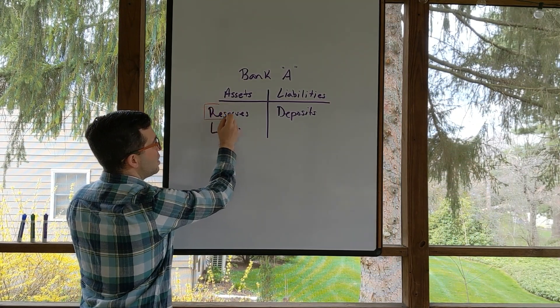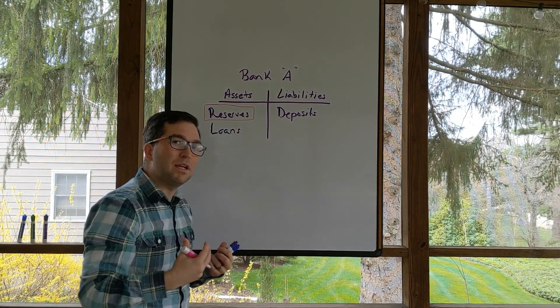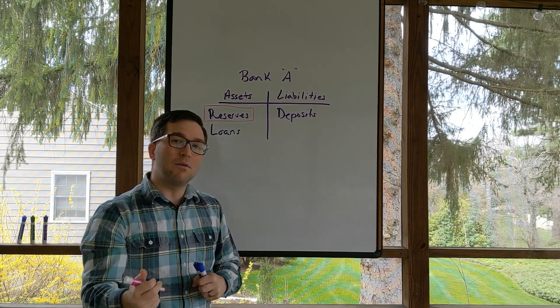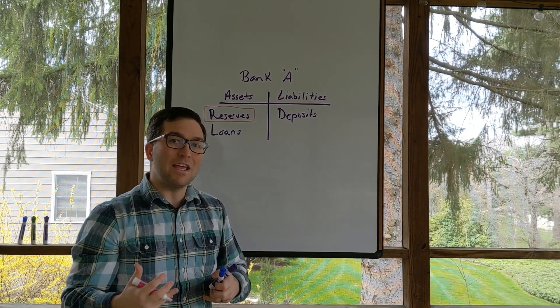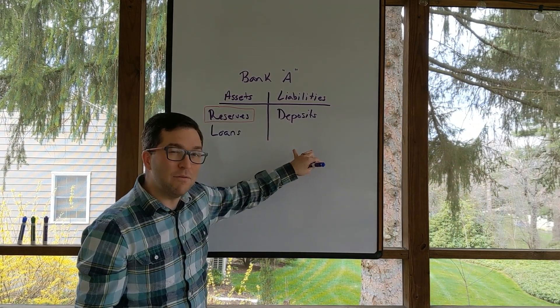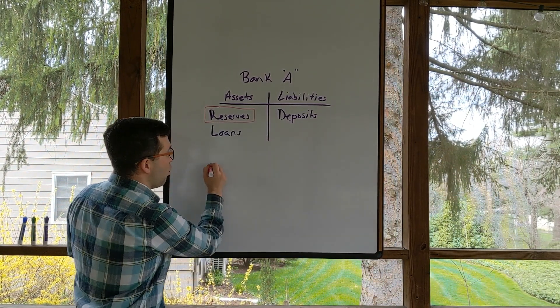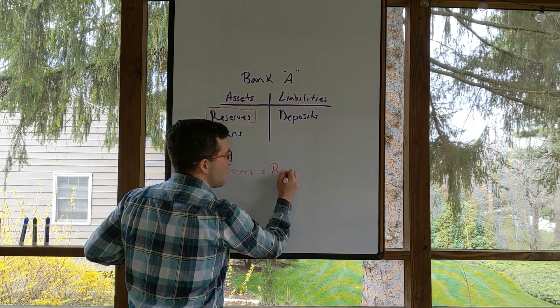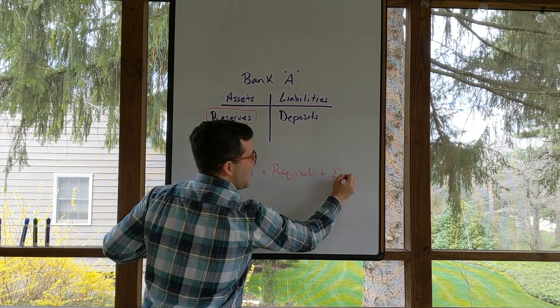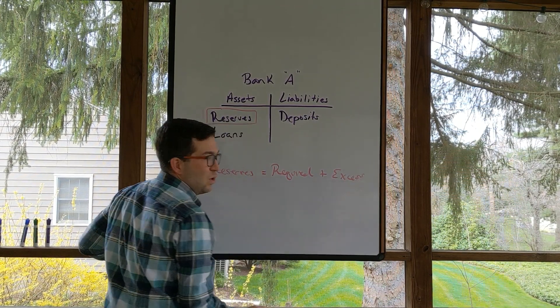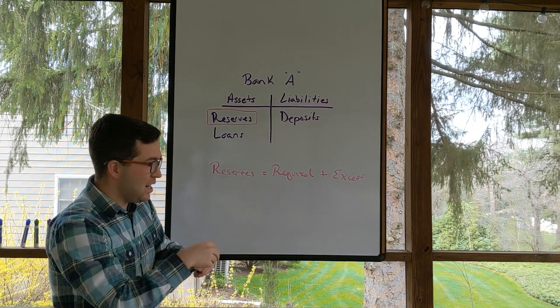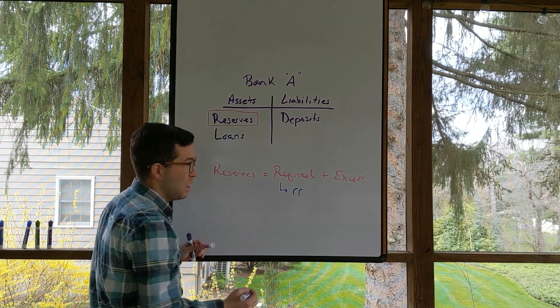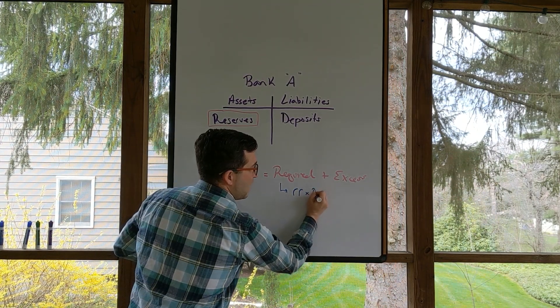And right here, these reserves can get split up into what's known as excess reserves and required reserves, because the Federal Reserve has some required reserve ratio that you must keep. So you're required to keep a percentage of your deposits. So the overall level of reserves is equal to those required reserves plus any excess reserves. The required reserves right here is that required reserve ratio multiplied by your deposits.